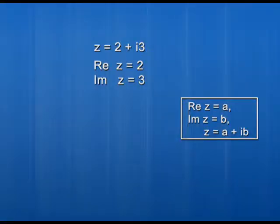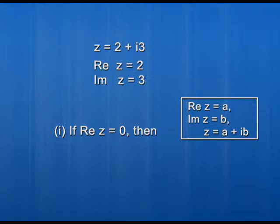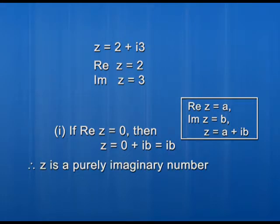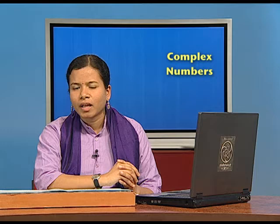Suppose Re(z) equals 0, meaning a equals 0. Substituting into z equals a plus ib, we get z equals 0 plus ib, which is simply ib. Since ib is the product of a real number with i, it is an imaginary number. Therefore, when Re(z) equals 0, z is a purely imaginary number.